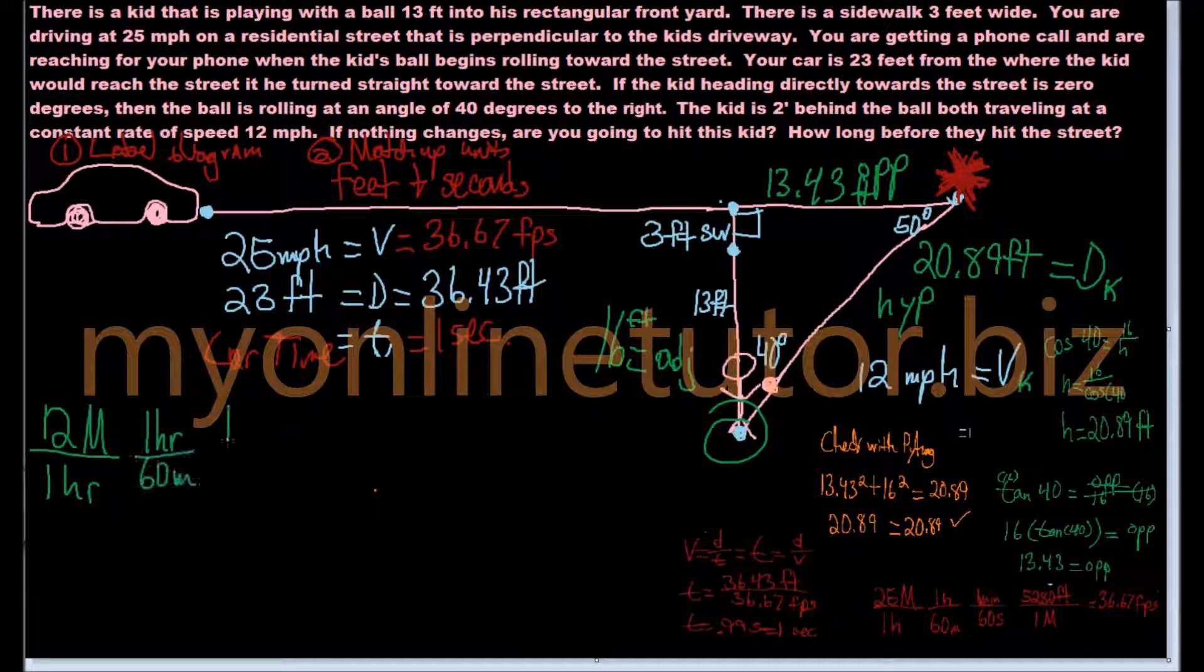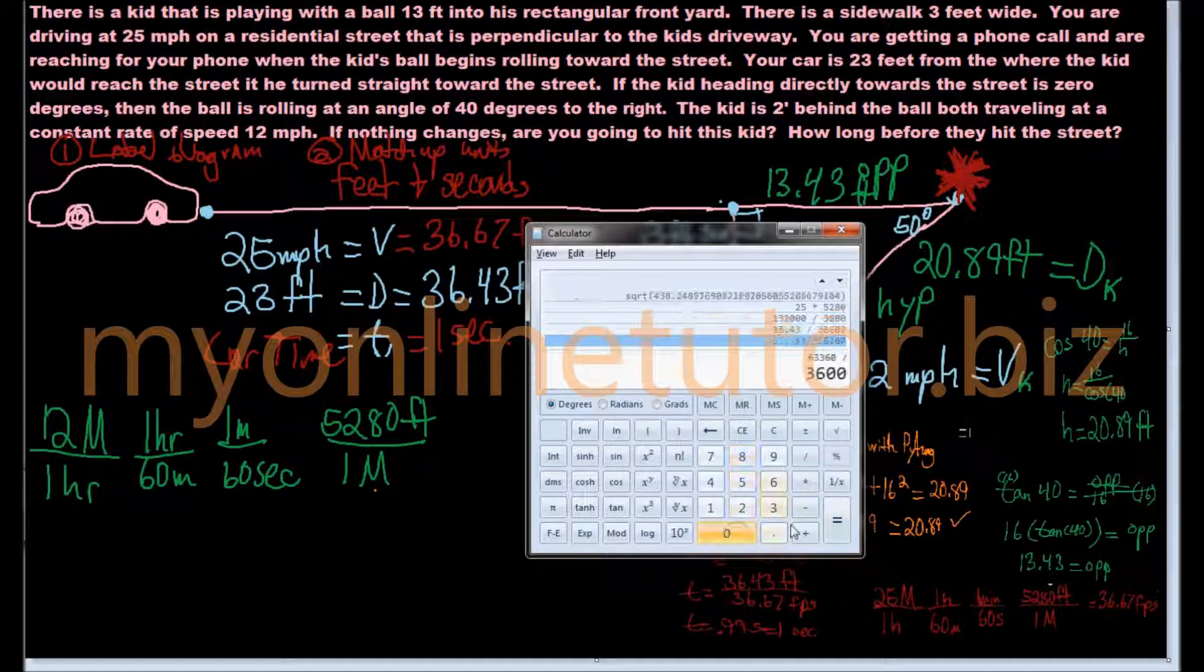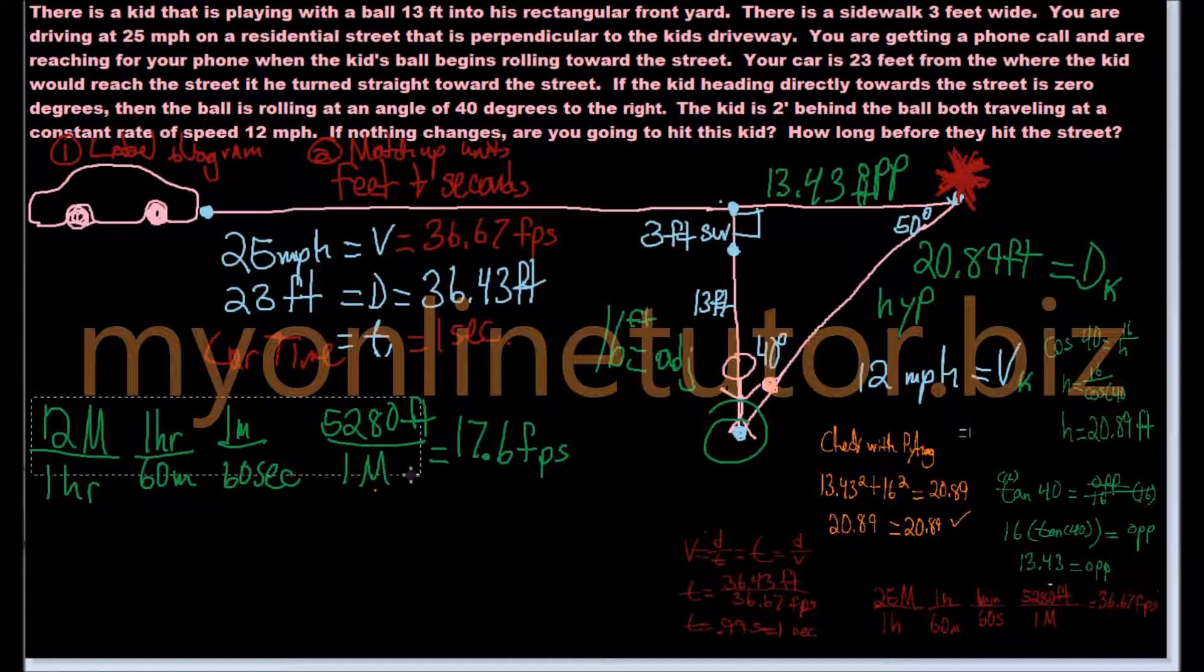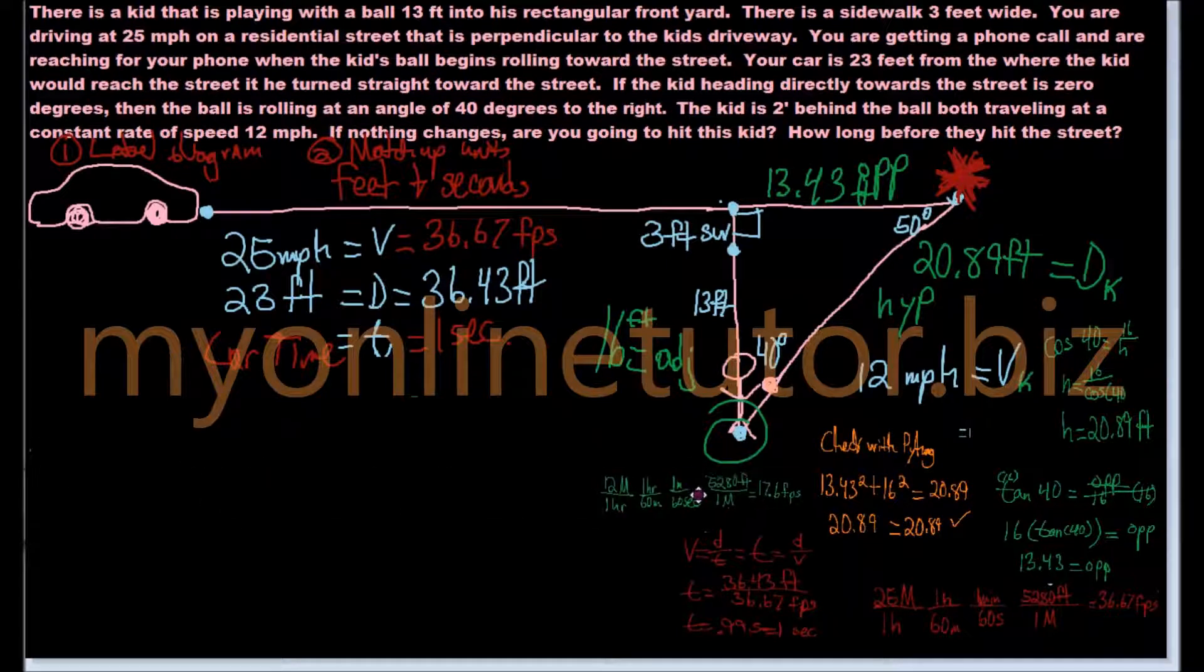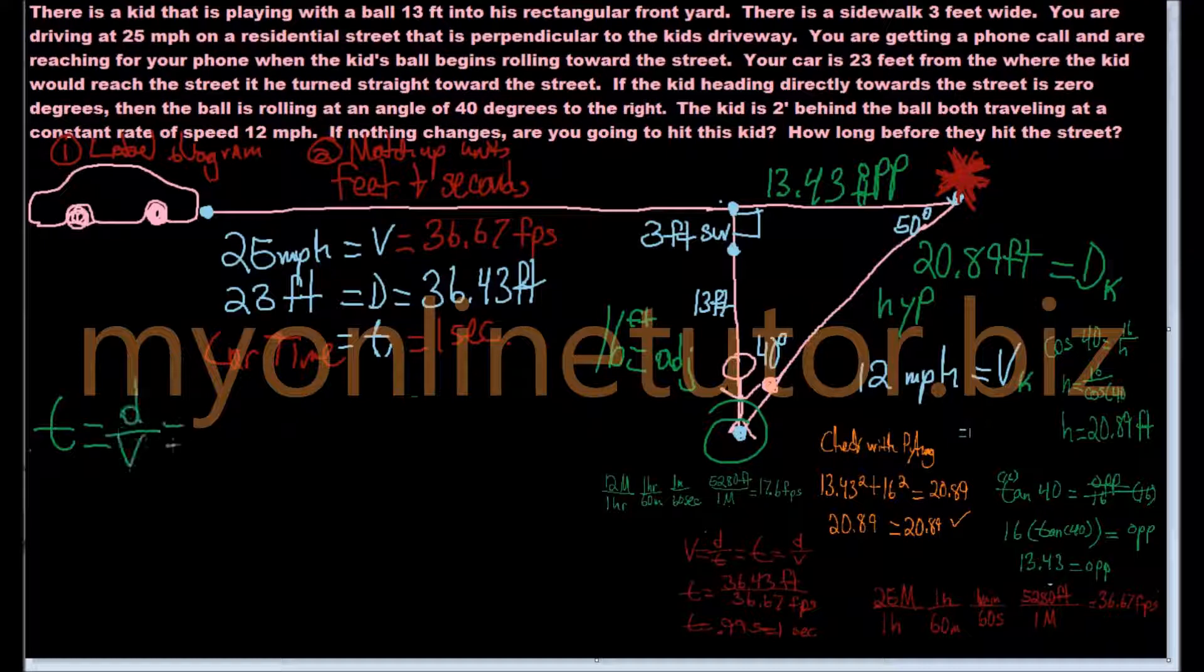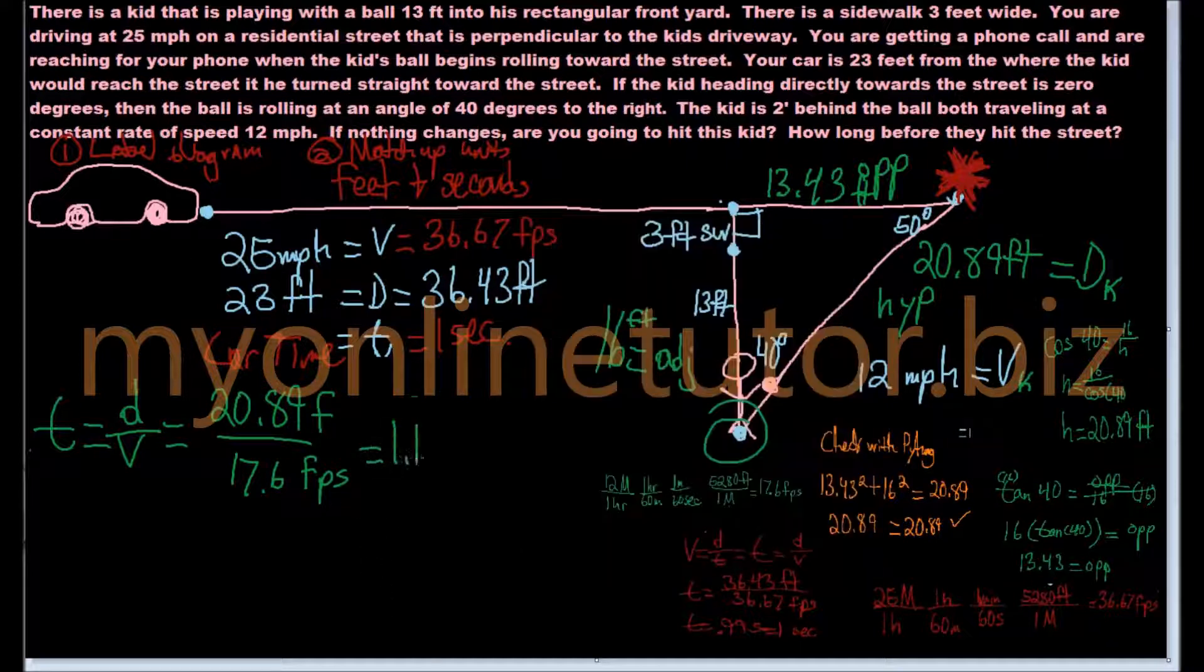Once you know that the car gets there in one second, you need to find out, is the kid there at the same time? So what you're going to do is convert that 12 miles per hour into feet per second for the kid. Once you find that out, same process, you get 17.6 feet per second. You take that 20.89 feet, and you divide that by 17.6 feet per second, and you find out that the kid gets there in 1.19 seconds.